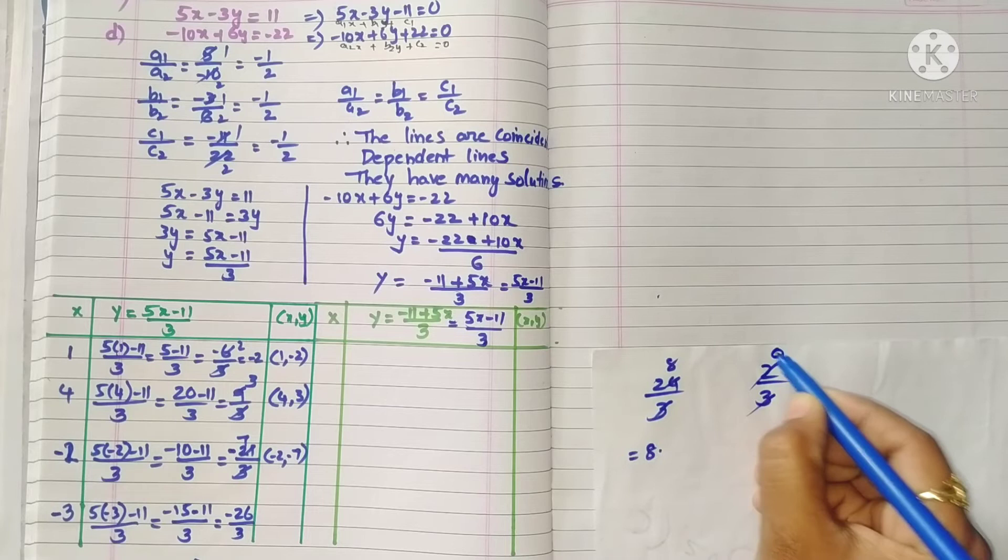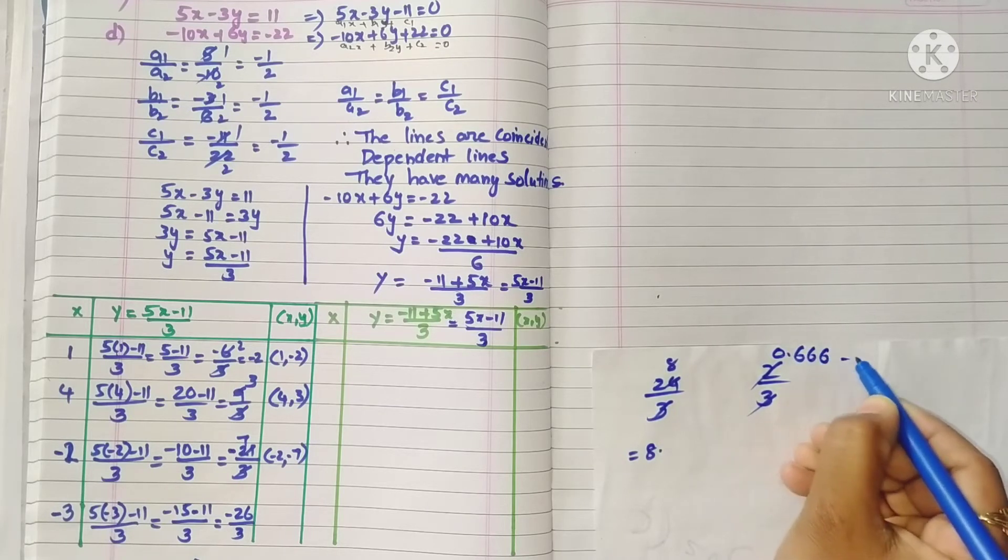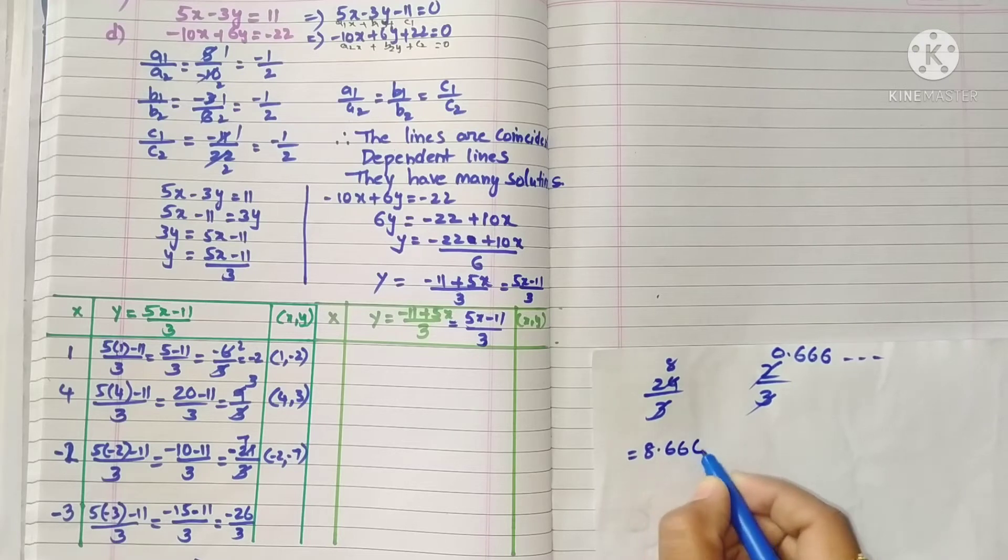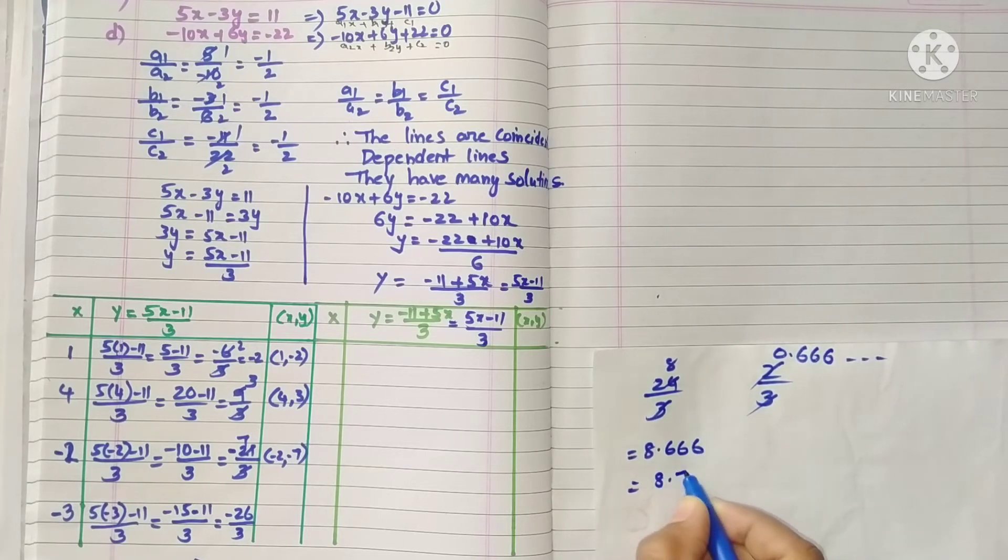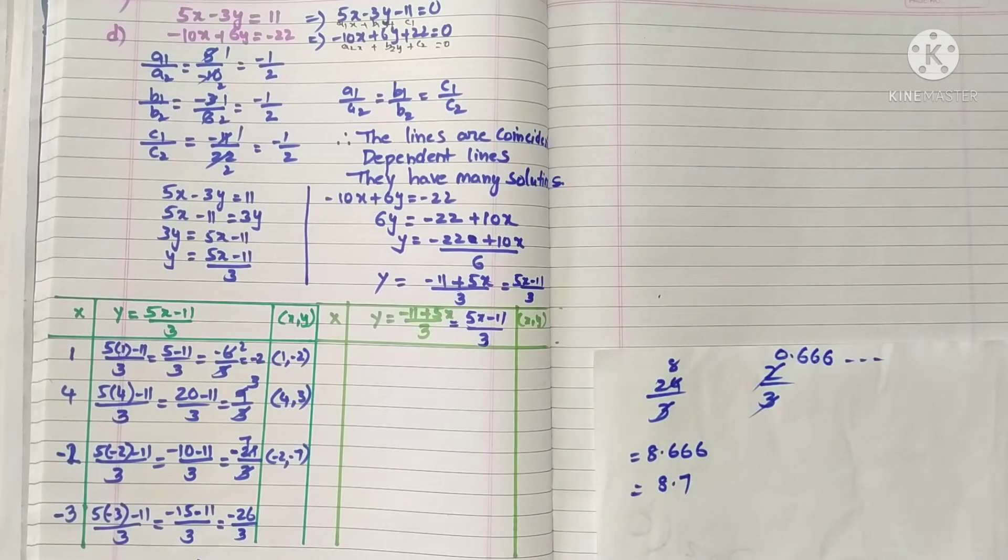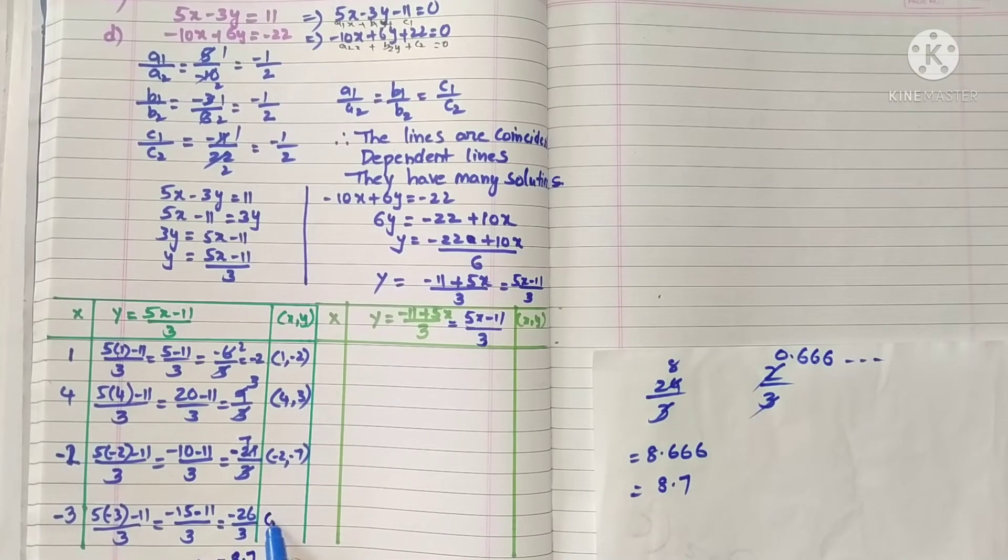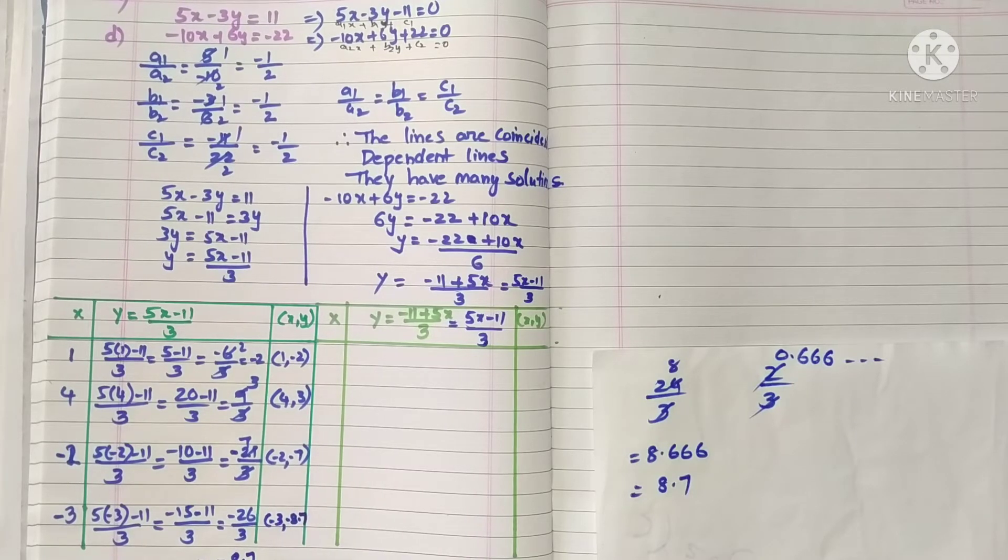24 by 3 is 8. So 26 minus 24 is 2. 3 into 6 is 18, so 0.666. This is 8.666, so we can take it as 8.7. So minus 3, minus 8.7.